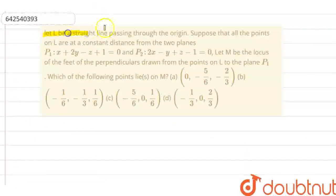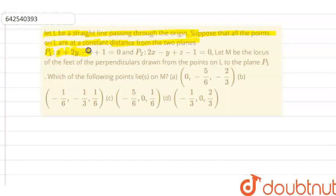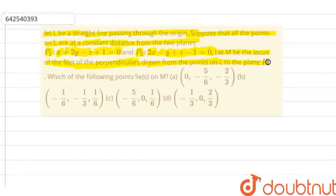The question is: let L be a straight line passing through the origin. Suppose that all the points on L are at a constant distance from two planes P1: x + 2y - z + 1 = 0 and P2: 2x - y + z - 1 = 0. Let M be the locus of feet of perpendiculars drawn from the points on L to the plane P1. Which of the following points lie on M? We have four options A, B, C and D and we have to find which one is the correct answer.